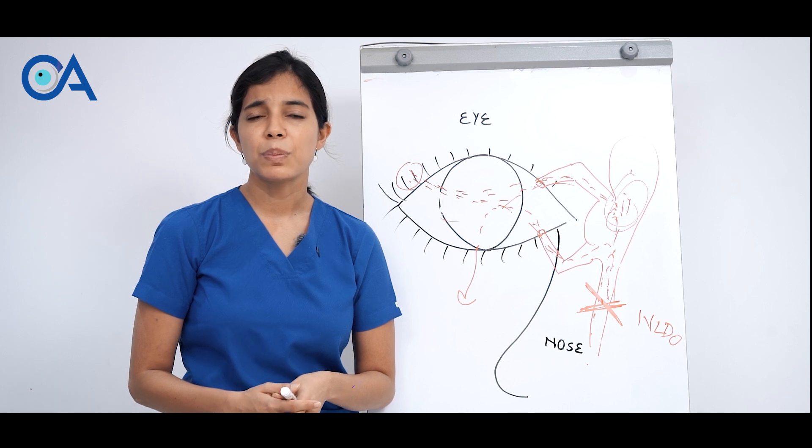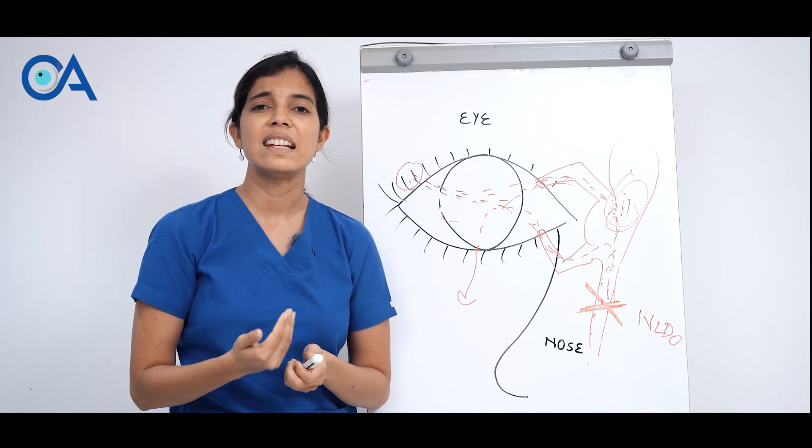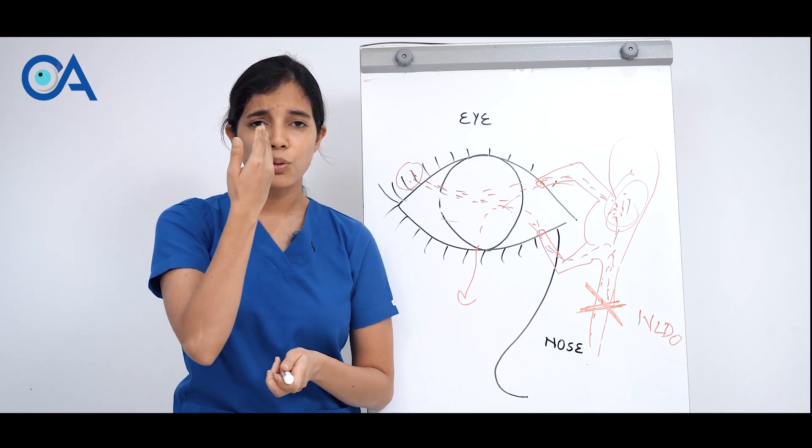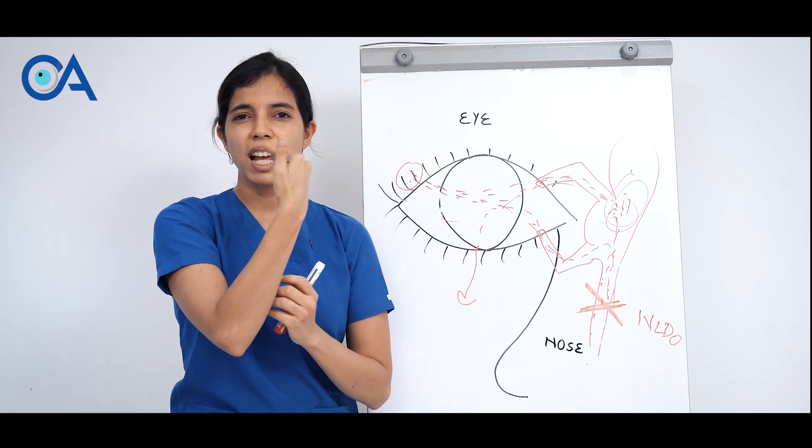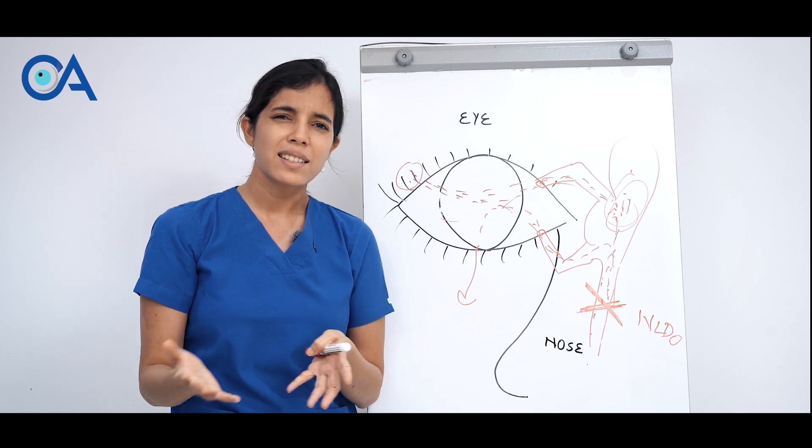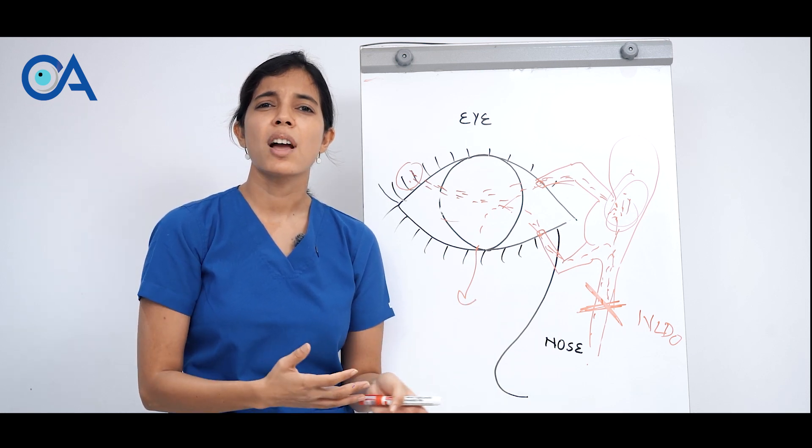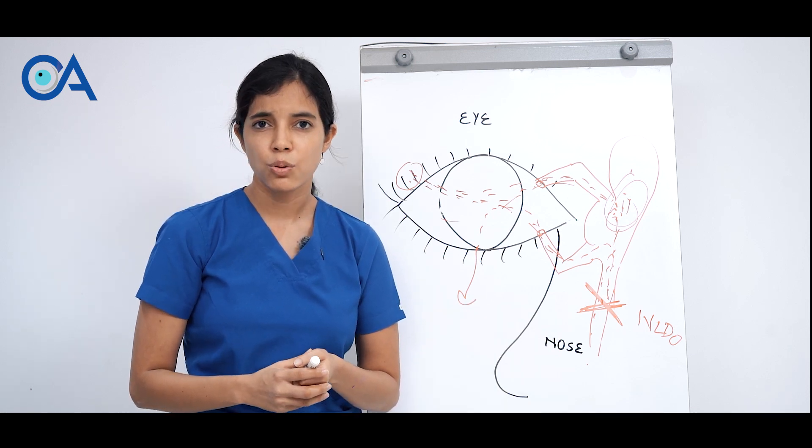It's also more common in people who have a deviated nasal septum. That means your nose is not equal on both sides and your septum can be deviated to one side. That also causes more chances of this type of obstruction to occur.